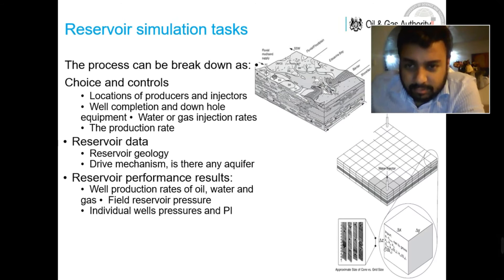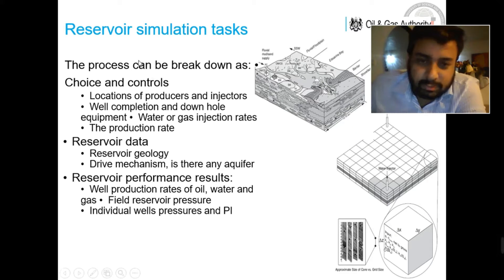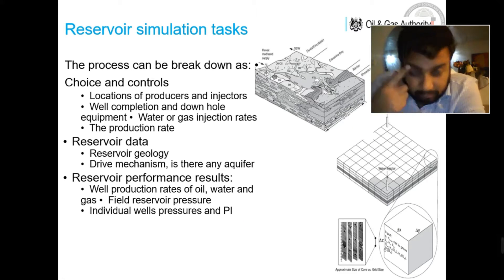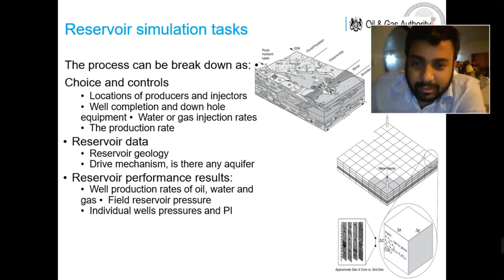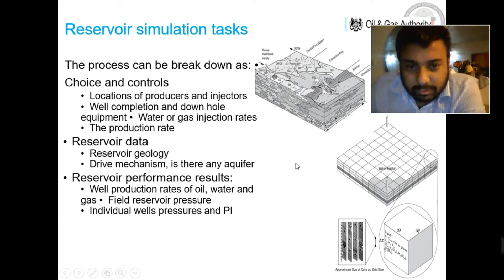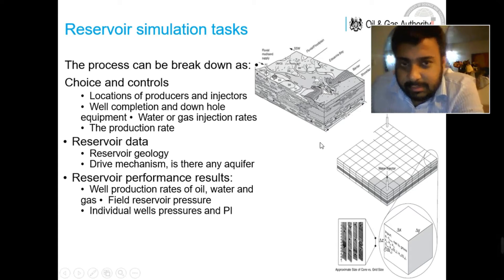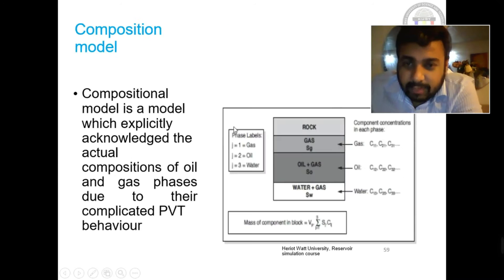In the compositional model, we define the complete composition. For example, we have ethane, methane, propane, butane, and so on. Instead of just saying 'oil,' we define what components make up the oil — like pentane, hexane, heptane, octane, nonane, and decane — and we define all the processes in detail.